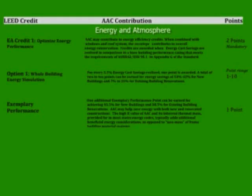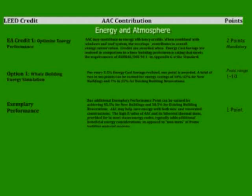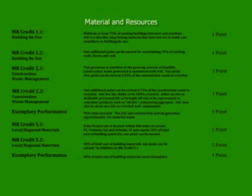Let me show you how AAC can contribute to your LEED credits. The first criteria is energy and atmosphere — when choosing the right window and door package and using an AAC shell, which includes floor and roof panels, you can achieve up to 13 points. The next criteria is materials and resources — the possibility of being recycled, having the project close to an AAC plant, and maintaining parts of an existing structure can contribute up to 8 points.